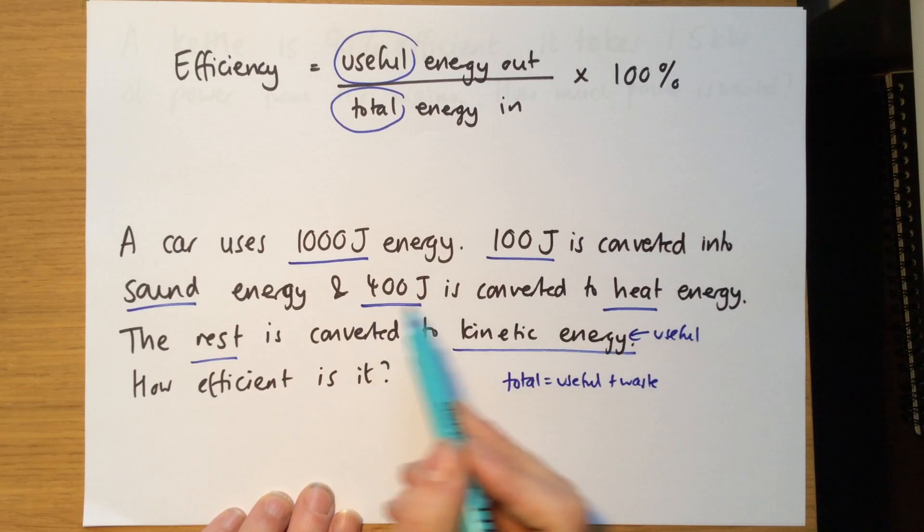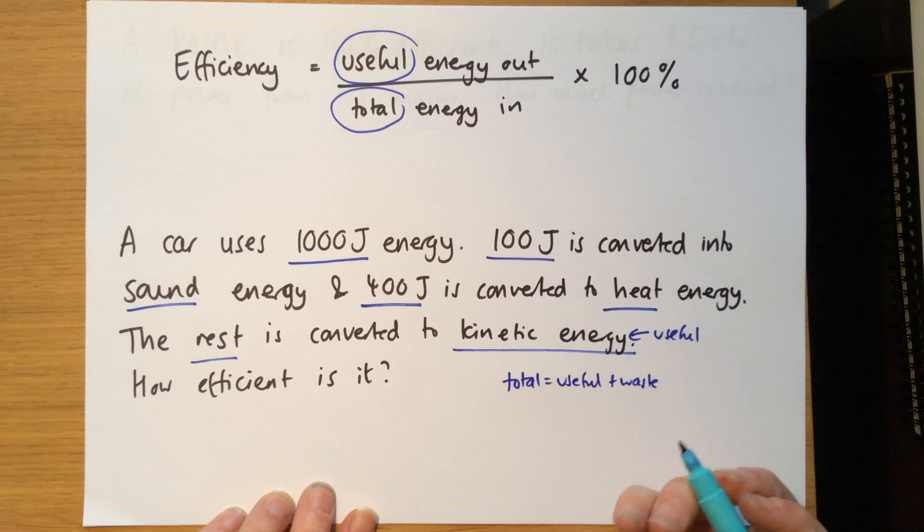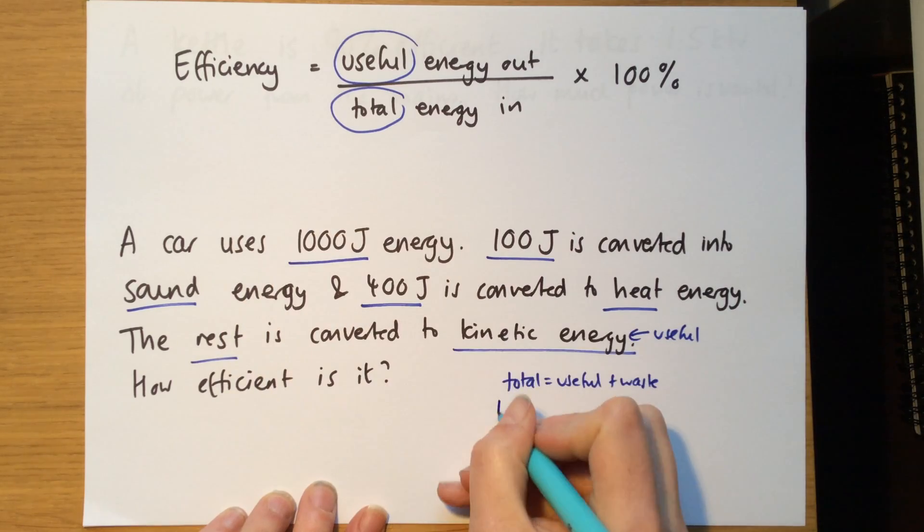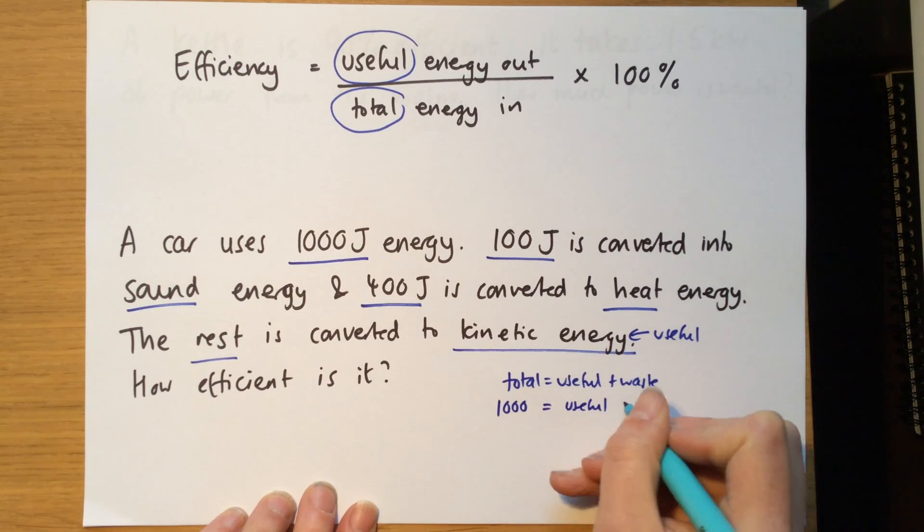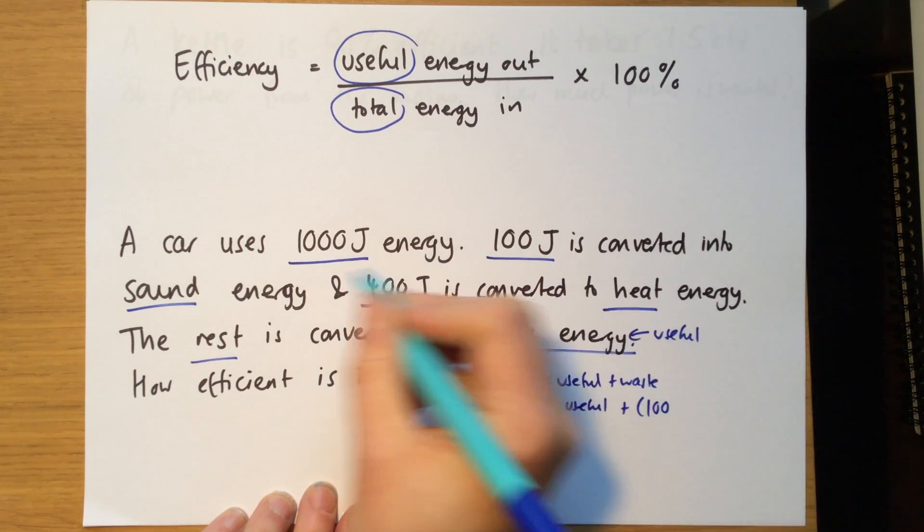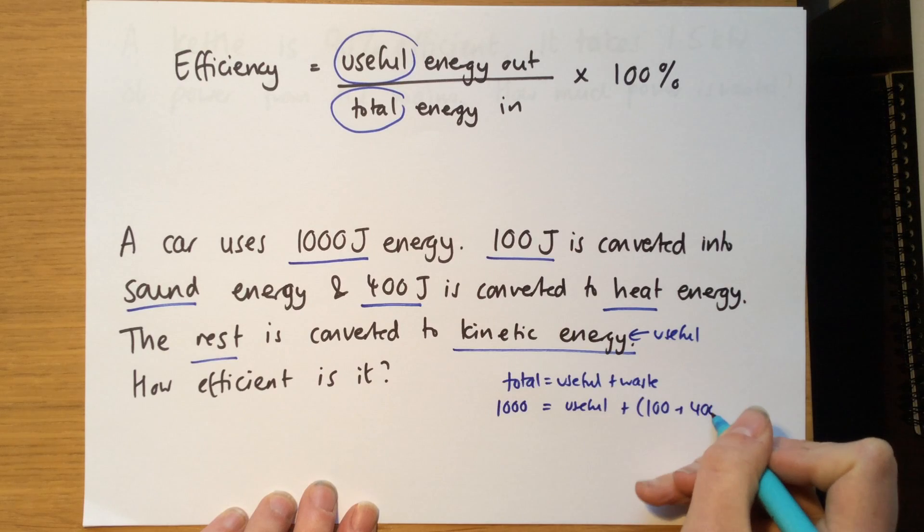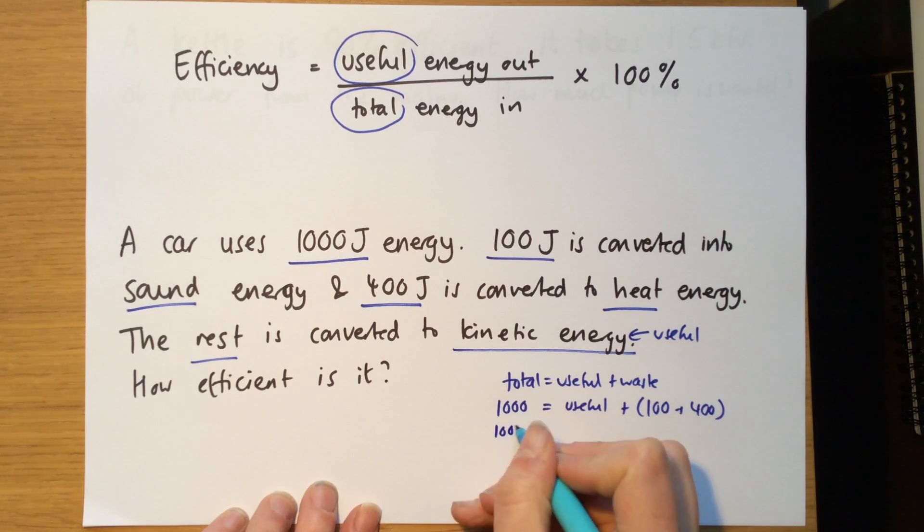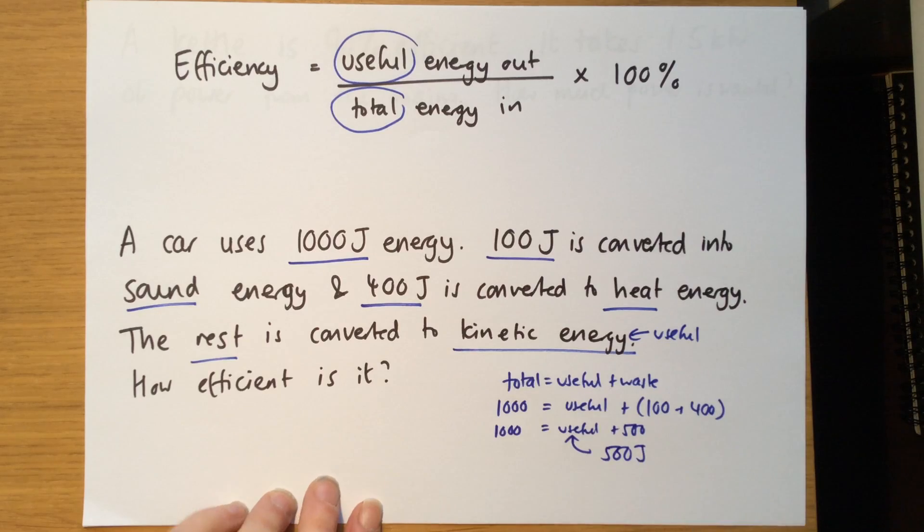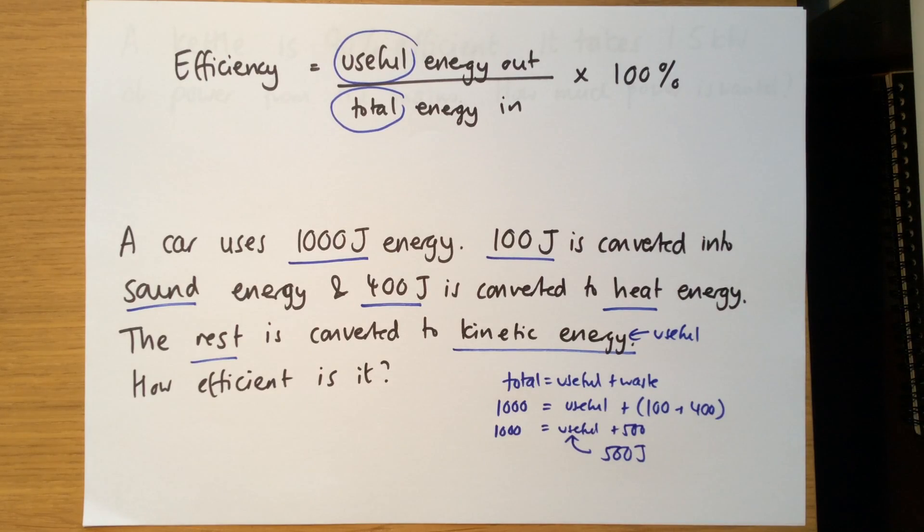Now, in a car, the sound and the heat energy are waste energy. We don't really care about them. They're byproducts. So we know that the total energy in, 1,000 joules, is equal to the useful plus the waste, which is 100 for sound, and 400 for heat, which is equal to 500. So 1,000 is equal to useful plus 500. So the useful energy must be 500 joules. It's 500 joules that is converted into kinetic energy.